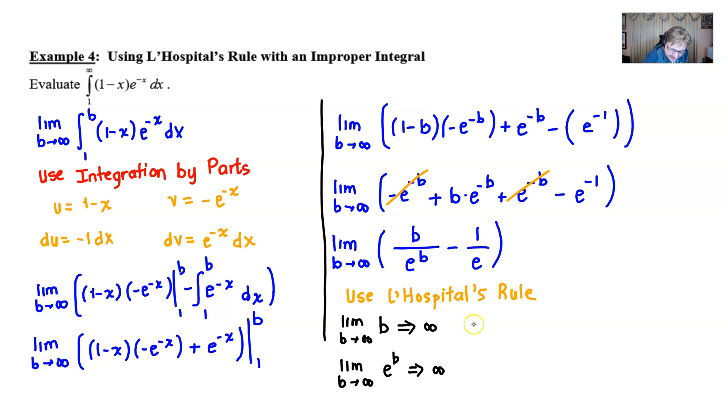So in any event, we are going to go ahead and make that happen. And the limit as b approaches infinity would now be working upon the derivative of b is 1, the derivative of e to the b is e to the b. Please note that I am taking those derivatives with respect to b, the only variable that I have here. And then, of course, the 1 over e is just a constant, so it's not going to really change.